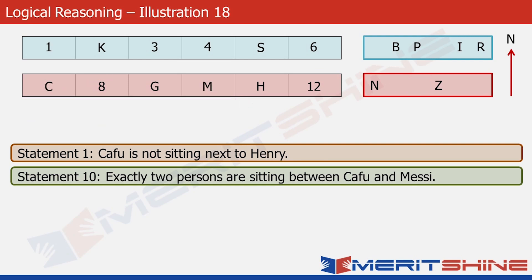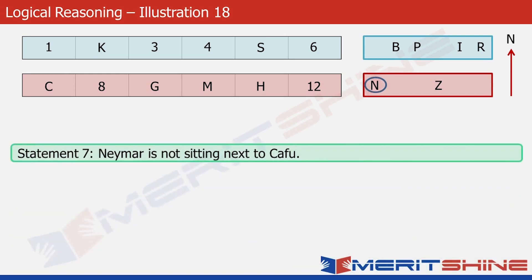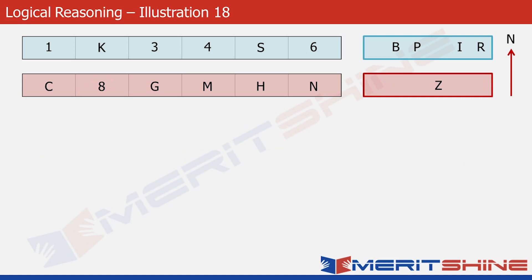Statement 7 says Neymar is not sitting next to Kafu, so Neymar cannot be at position 8. The only position left for Neymar is number 12, so let's put him there. That leaves just Zidane, and the only position remaining is number 8 — so Zidane occupies position 8.